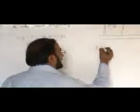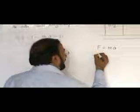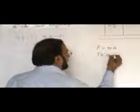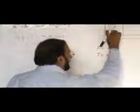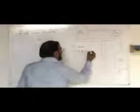For body B, force is equal to ma, and tension is equal to ma. Applying Newton's second law to both bodies, we write tension equal to ma for each body.